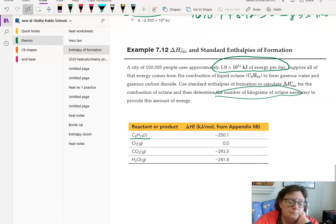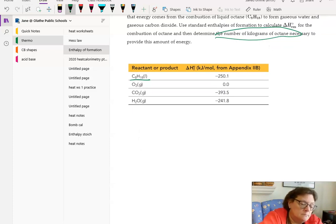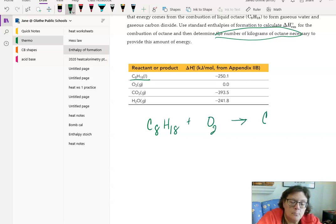Alright, we're going to work this problem. First of all, there's some information that we don't need to start with right away. It tells us the amount of energy a city is using every day, and it wants to know how many kilograms of octane do they need to burn in order to make that amount of energy. First we need to know how much energy is made when you have one mole of octane that is reacting.